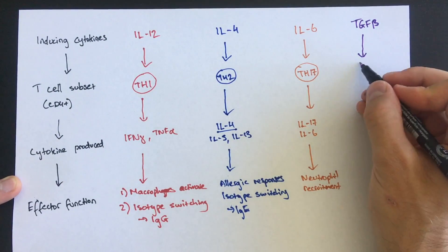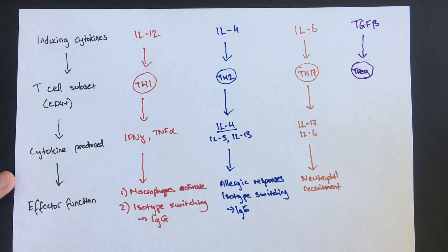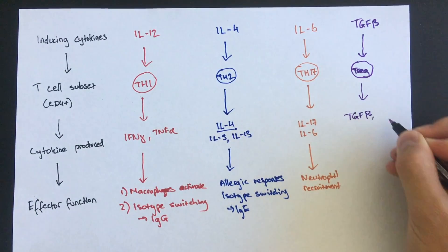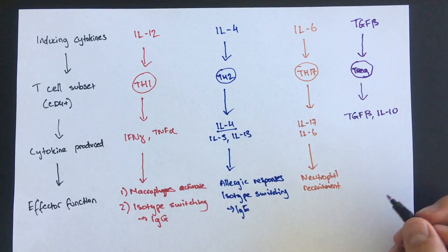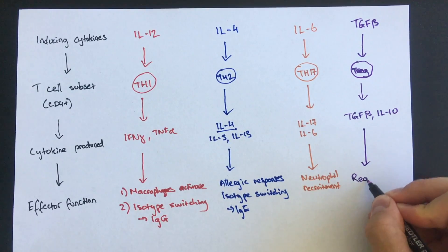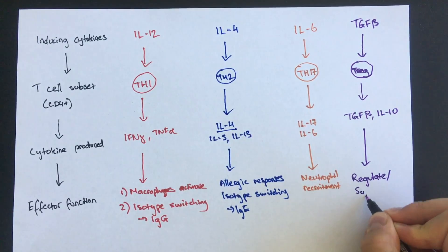Another pathway is when TGF-beta stimulates T cells, which is different in that it produces a regulatory T cell via upregulation of a FOXP3 transcription factor. These cells produce TGF-beta or interleukin-10 and help regulate and suppress the immune system.